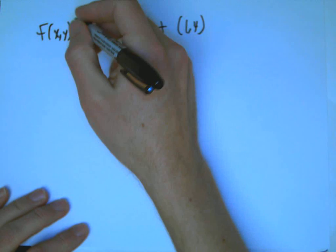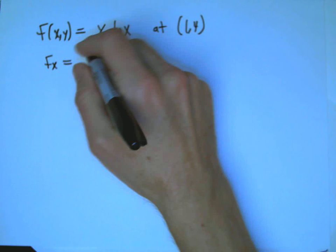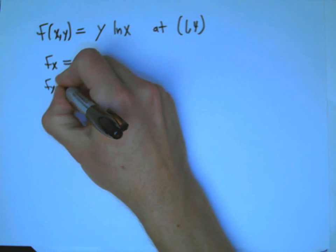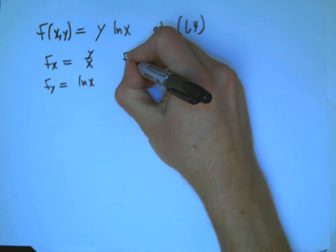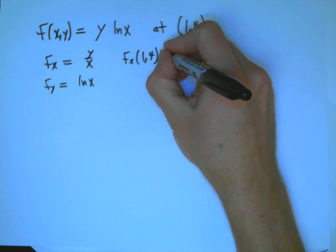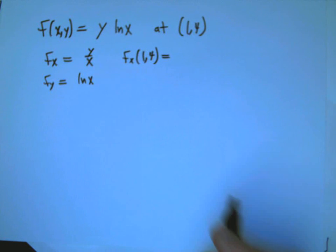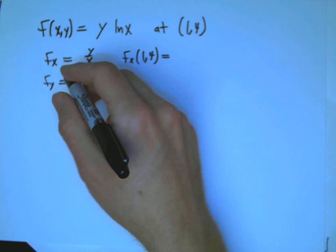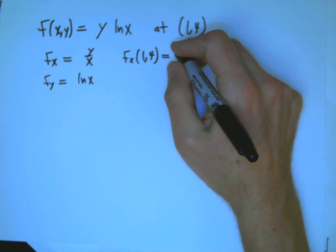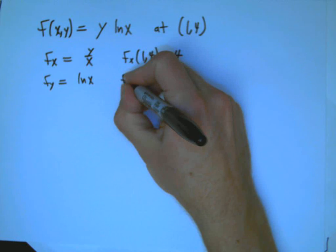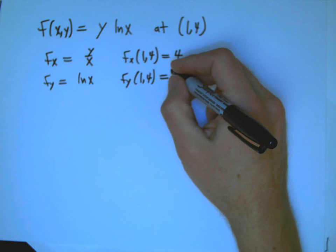So, the main calculation tool is the partial derivatives, and so fx is going to be y over x, and fy is just ln x. And so at the point in question, this is very much like the tangent line for one variable, where you only really care about this at one point. We're going to plug in x equals 1, y equals 4, and so we get fx(1,4) = 4, and fy(1,4) is just 0.